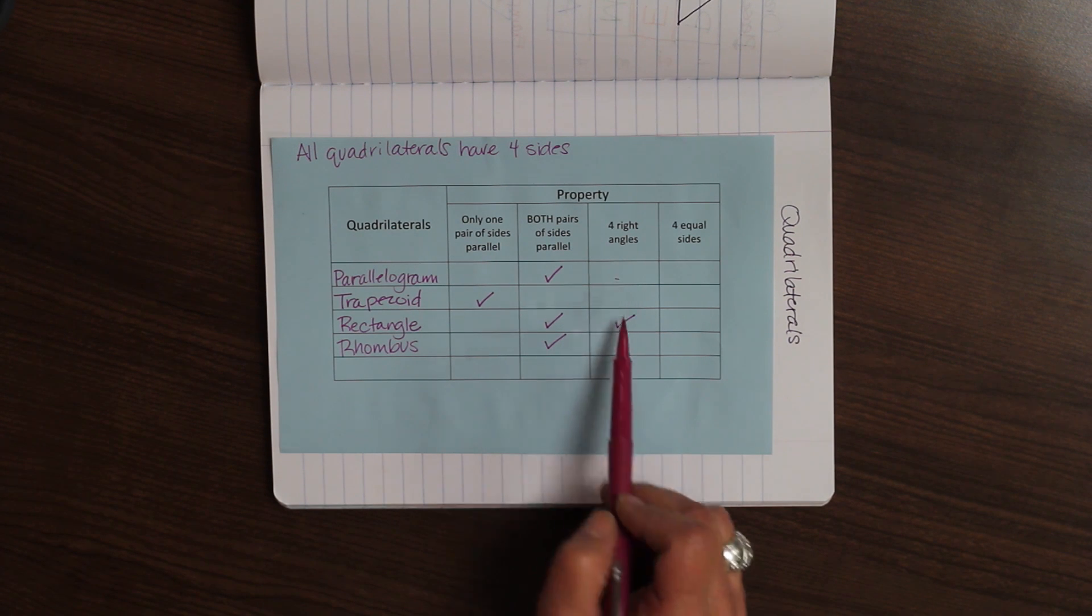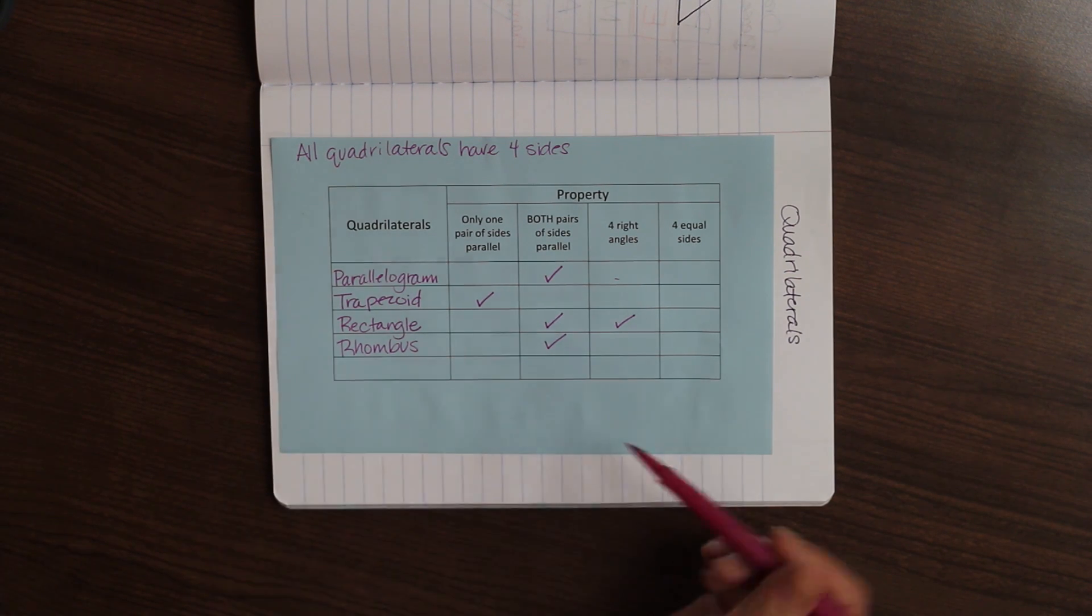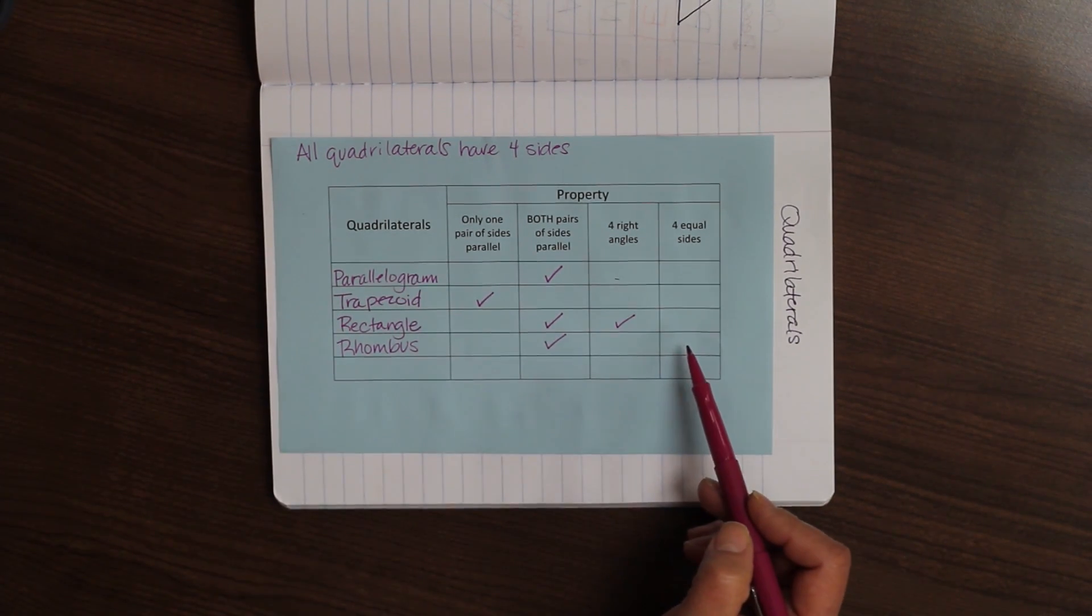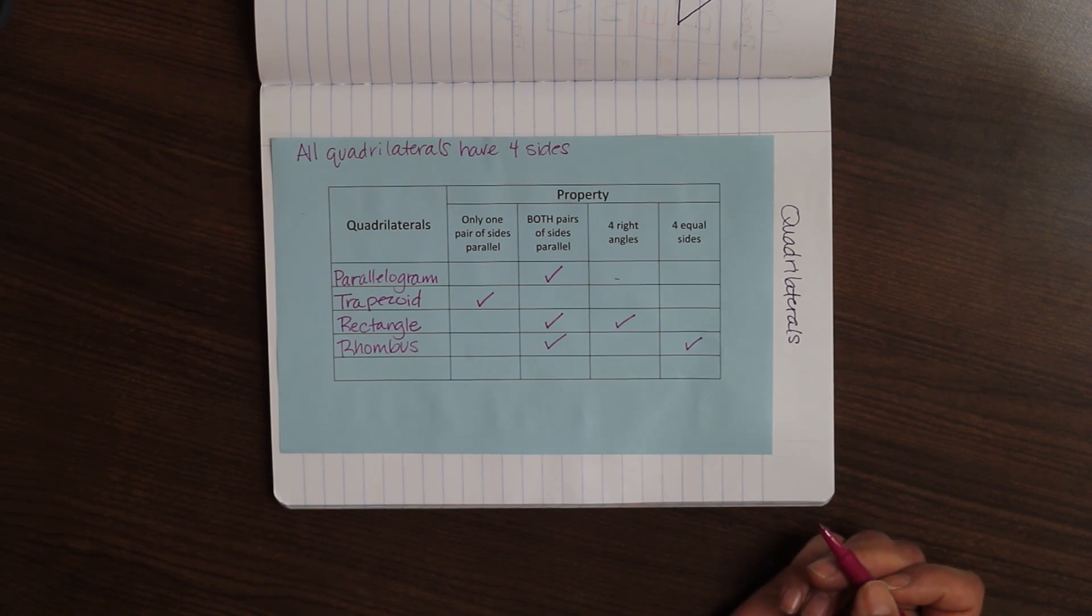Four right angles? That's not true. Remember it's kind of sideways. And four equal sides. Yes, it does have four equal sides because it's a square that's been hit by a bus.